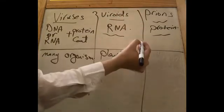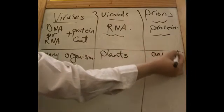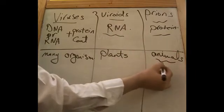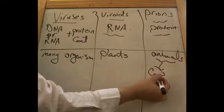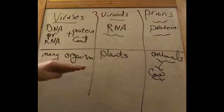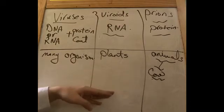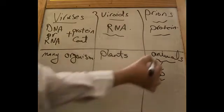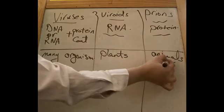Prions infect animals like cows. They cause bovine spongiform encephalopathy or mad cow disease. Can prions infect humans? Yes, and the disease, the fatal disease, is called Creutzfeldt-Jakob disease.